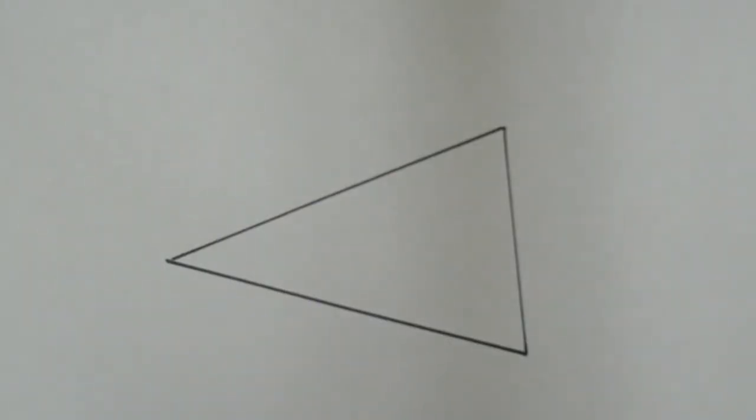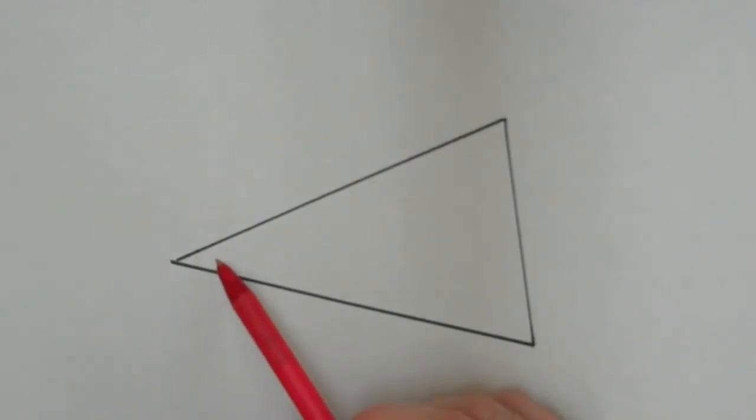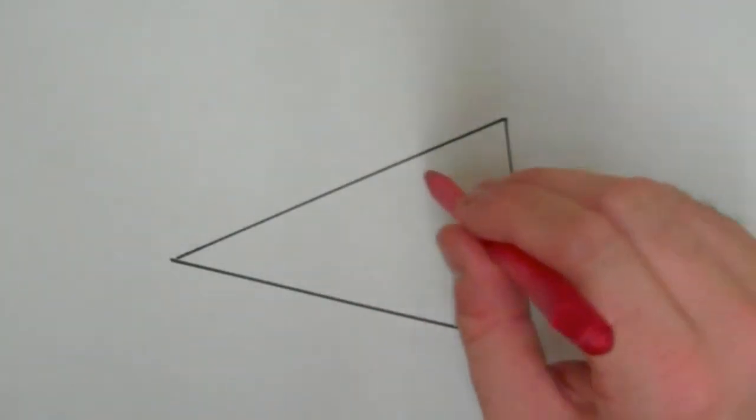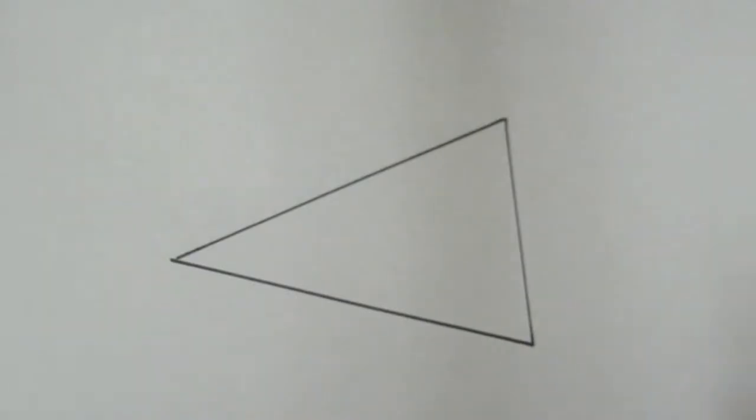Very similar to the perpendicular bisectors that we did in the last tutorial, you actually only need to do two in order to complete this construction. The third one is implied, you don't need to do the third one. So I'm going to construct the angle bisectors of this angle and this angle right here, and that should give me my in-center, which is the center of the circle that inscribes the triangle, which means it's going to be right here on the inside.